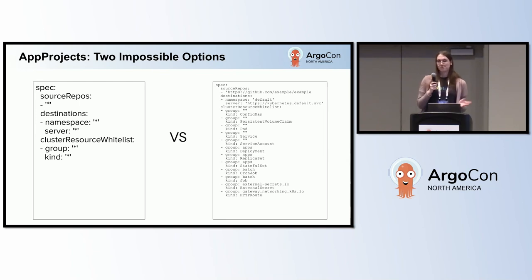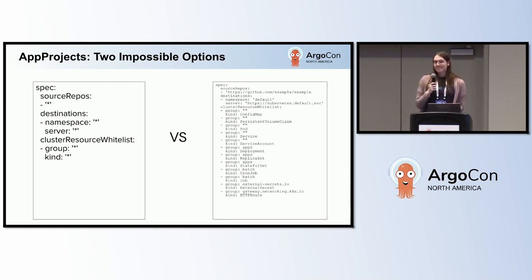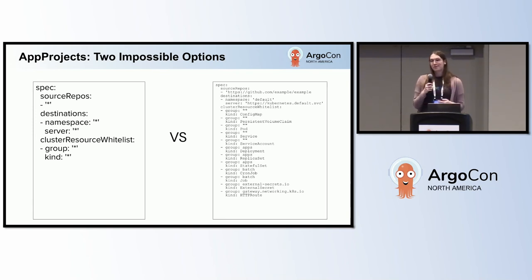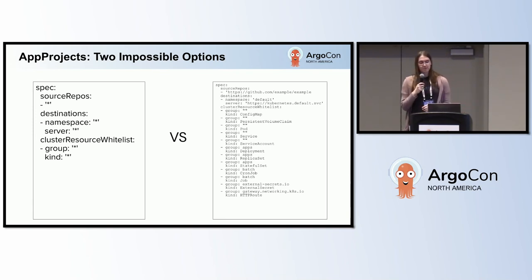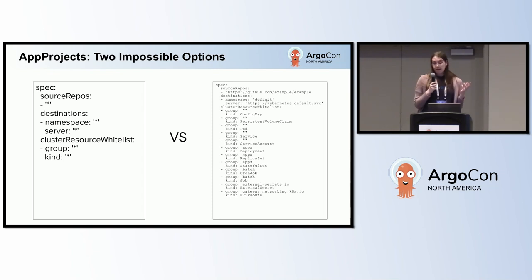But obviously there are some security concerns with this. Teams are going to be able to deploy to any namespace, and they're going to be able to deploy resources that they shouldn't be able to. So that's just bad overall.